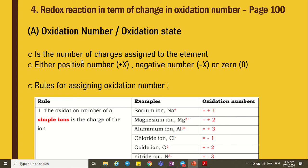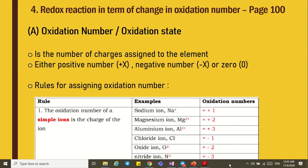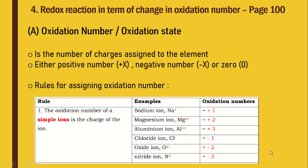Oxidation number is the number of charges assigned to an element — either a positive number, a negative number, or zero. There are a few rules for assigning the oxidation number. Rule 1: the oxidation number of a simple ion. For example, sodium ion.